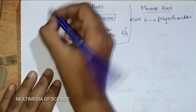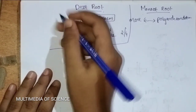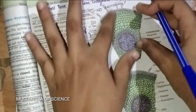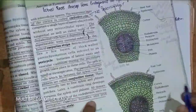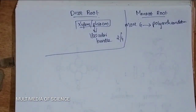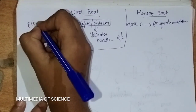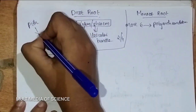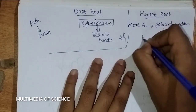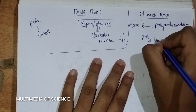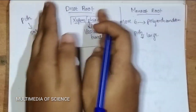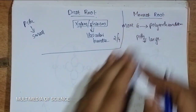In Dicot root, pith is very small. But pith is very large in Monocot root. That is the main difference between Dicot root and Monocot root.